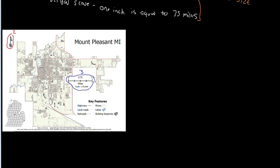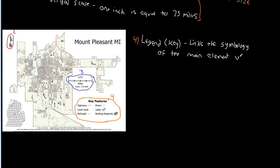The next big piece that I want to talk about is actually going to be this piece right here. So this is going to be the legend, or sometimes called the key. Now, what the legend or the key does is it provides a critical connection between the symbology of the main element and what they represent in the real world. So this links the symbology of the main element with the information necessary to interpret it.